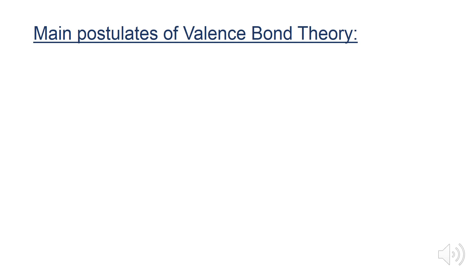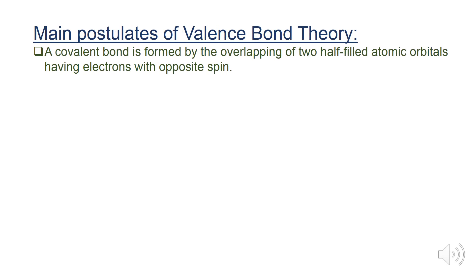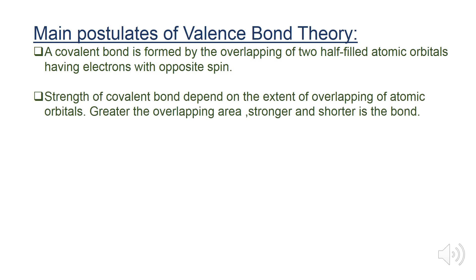The main postulates of valence bond theory are: a covalent bond is formed by the overlapping of two half-filled atomic orbitals having electrons with opposite spin.